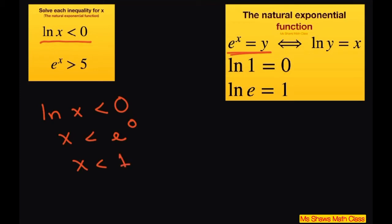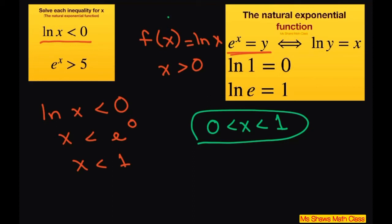Now since the domain of f of x for logarithms, for our natural logarithms, is x has to be positive, then the solution of our original inequality is going to be x has to start at 0. It can't be 0 and it's also going to be less than 1. So it's in between this. You have to consider your domain of your natural log.